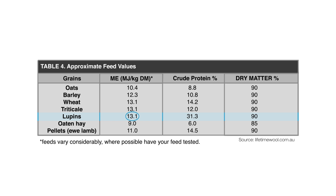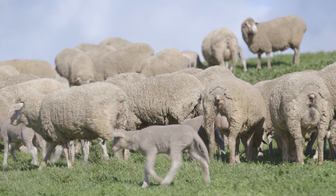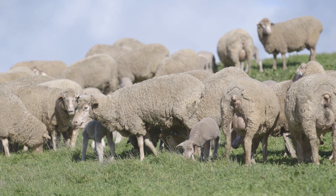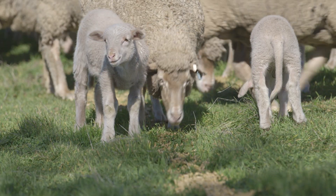You can estimate the ration to be fed using the following table. We know that lupins' metabolisable energy is 13.1, so we follow down the left side of the table until we hit 13. We also know that we need to make up 9.2 megajoules to maintain condition. So we then go from 13, following across the table to the right, until we hit 9.4 as it's the closest to what we need. From 9.4 we follow directly up the table to the top, which takes us to 0.8. This means that we need 0.8 kilograms or 800 grams per head per day of lupins to be fed to the ewes in order for them to maintain their current weight and condition score.